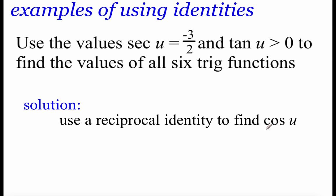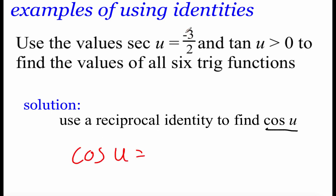The first one we're going to find is the cosine of angle u, and the reason we're going to do that first is because there's a relationship between the secant and the cosine — they're reciprocals of each other. So that reciprocal identity says all we have to do is flip that secant fraction over, giving us 2 over negative 3, or negative two-thirds.